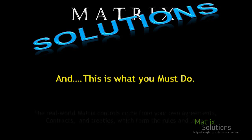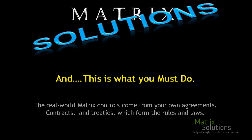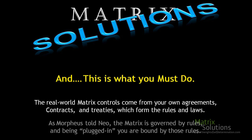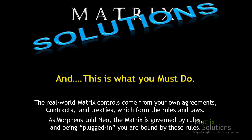The real-world matrix controls come from your own agreements, contracts, and treaties, which form the rules and the laws. As Morpheus told Neo, the matrix is governed by rules, and being plugged in, you are bound by those rules.